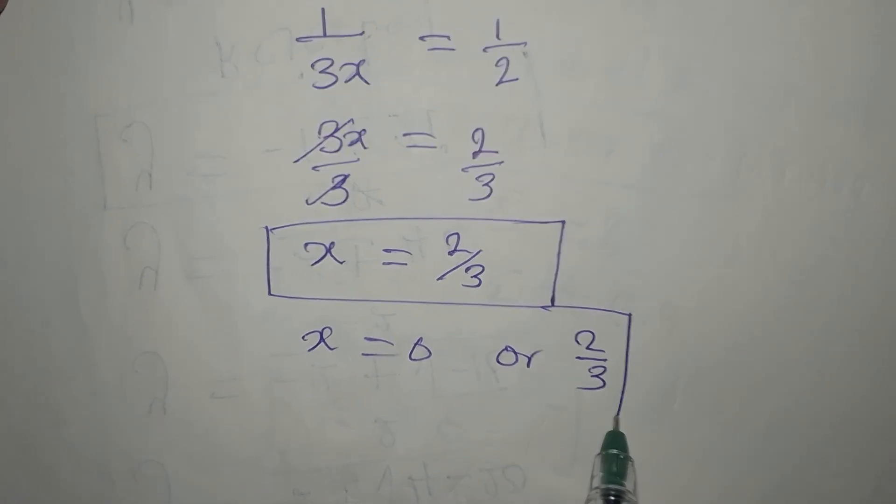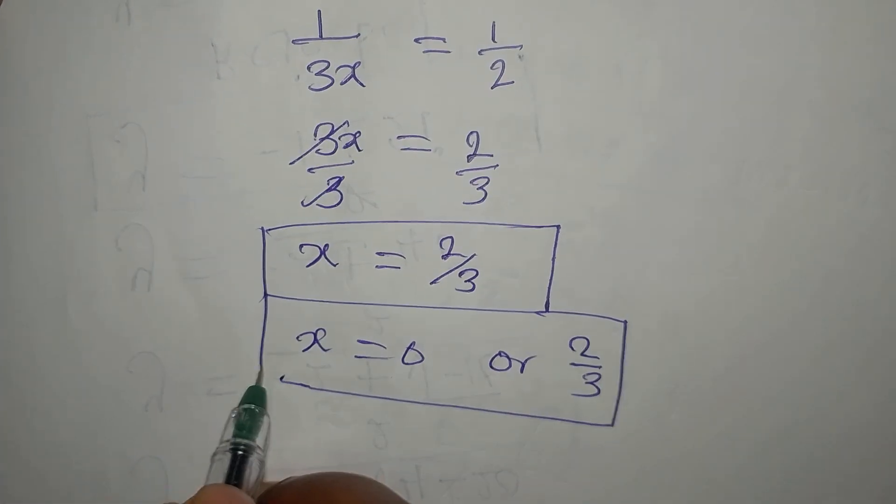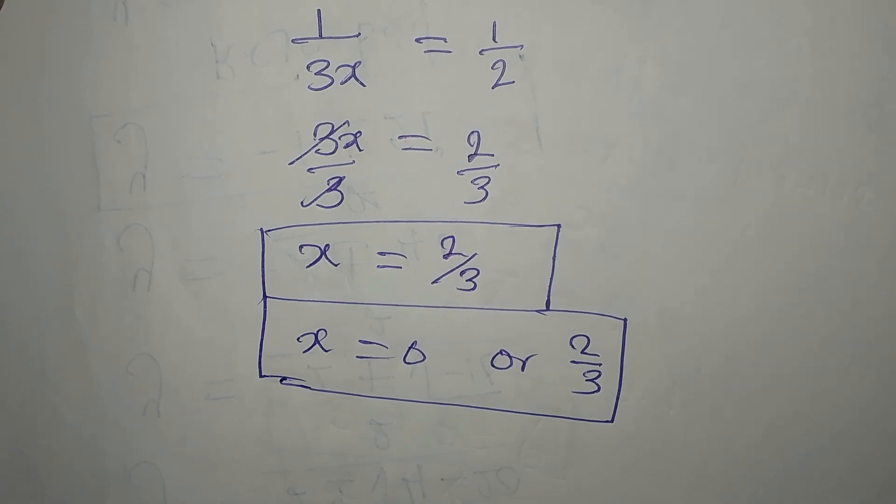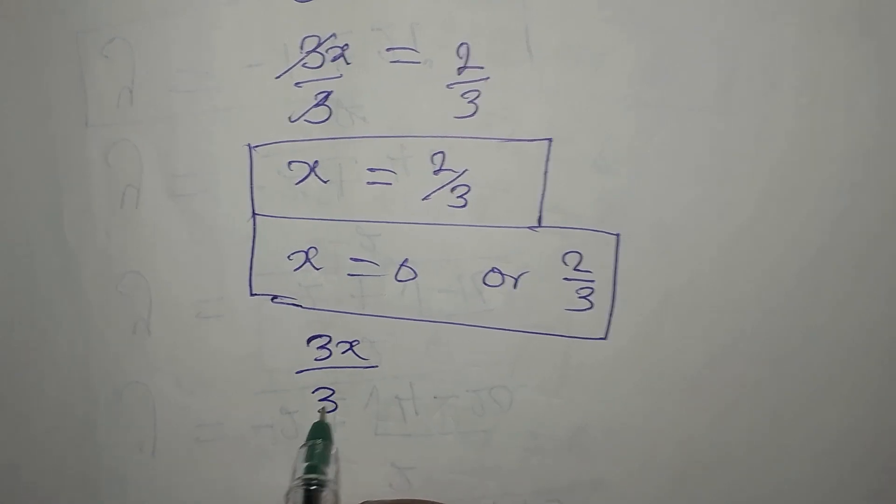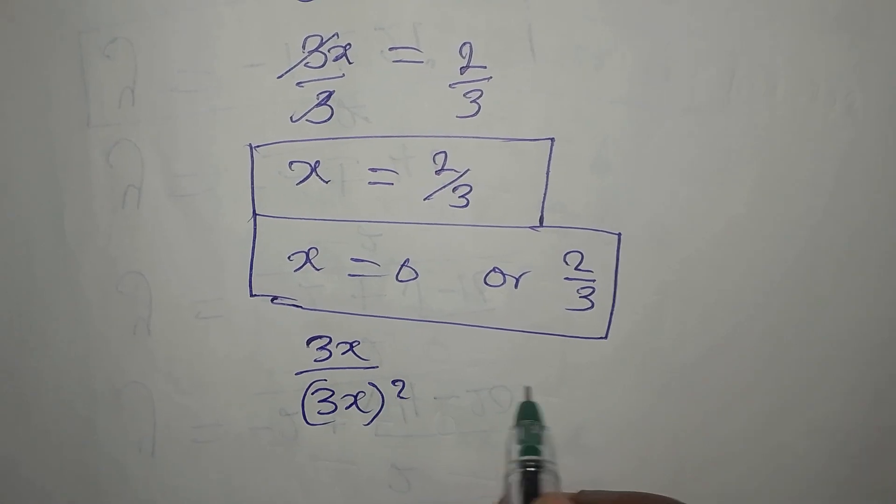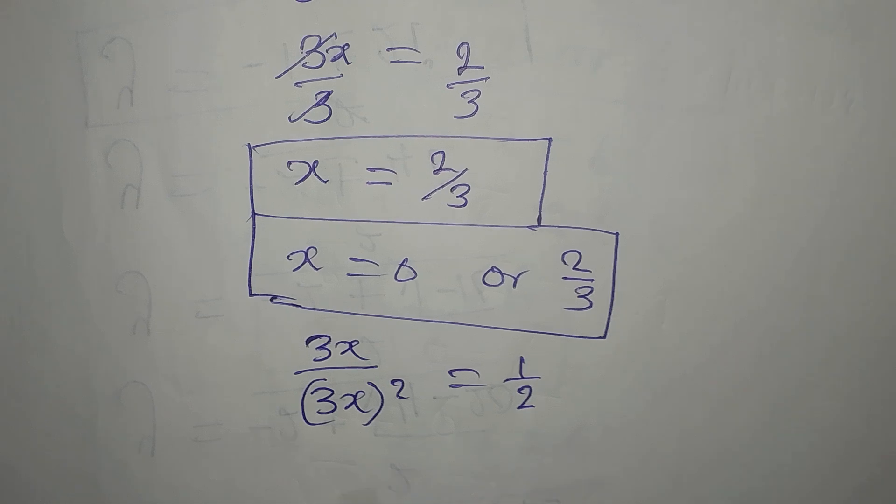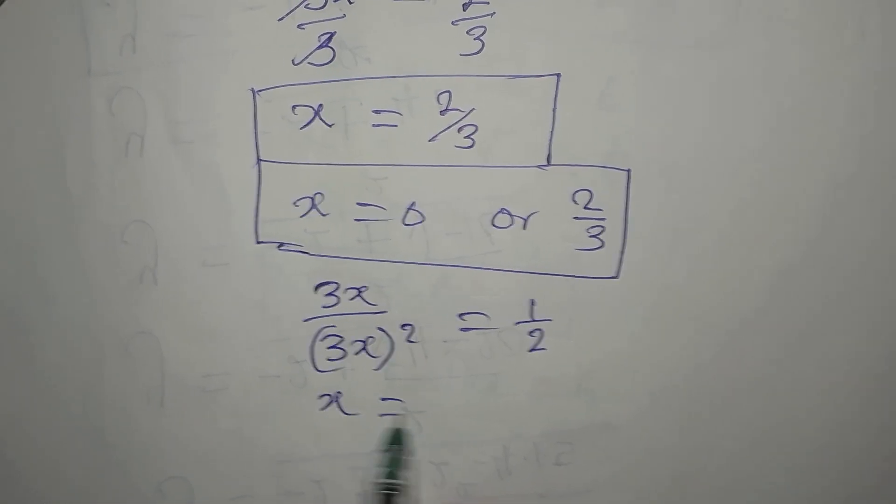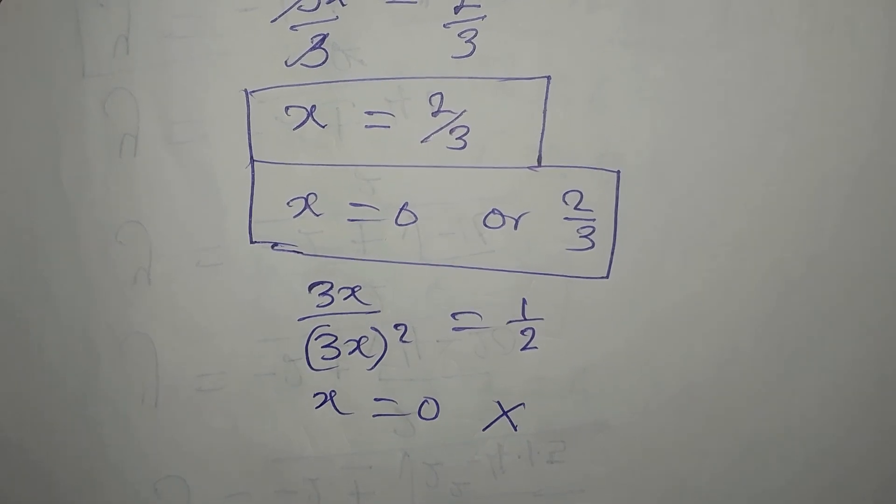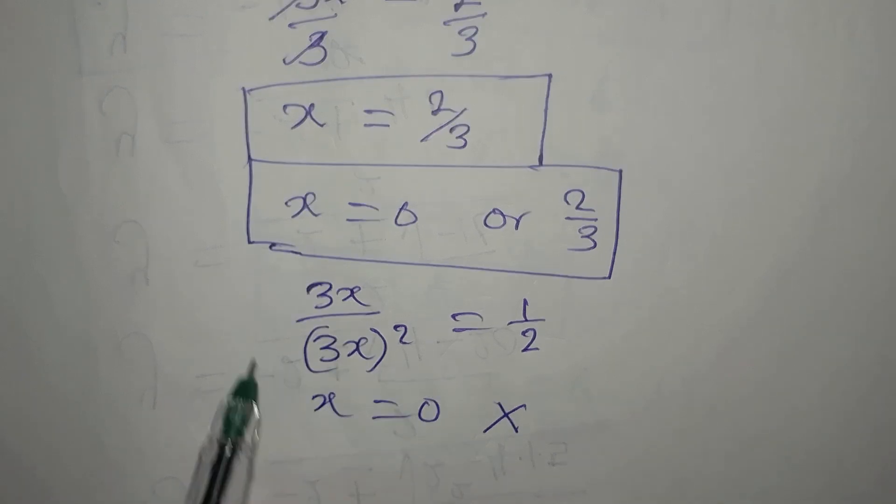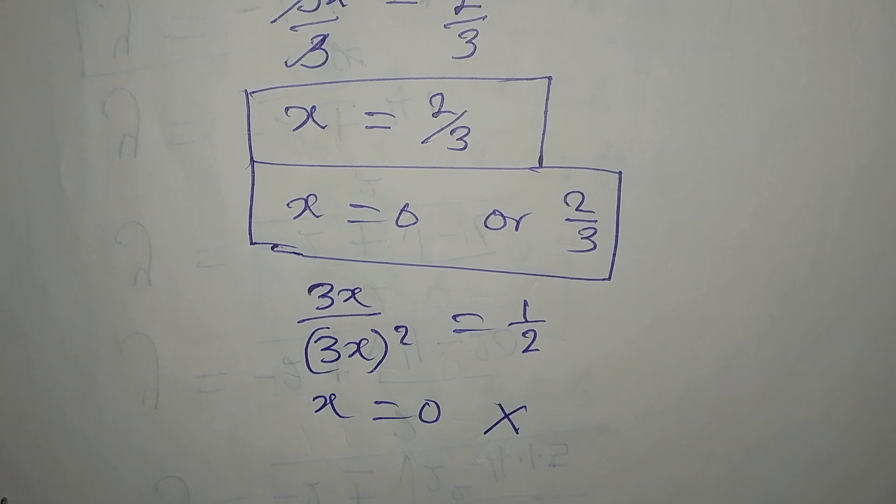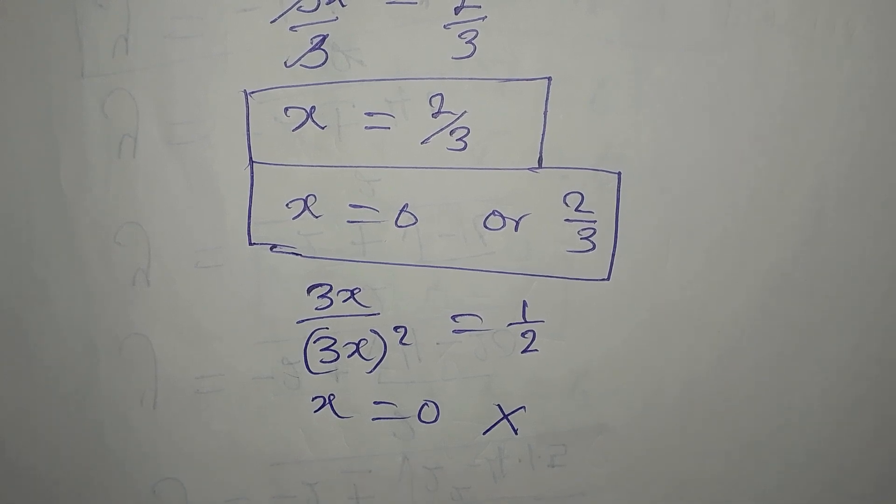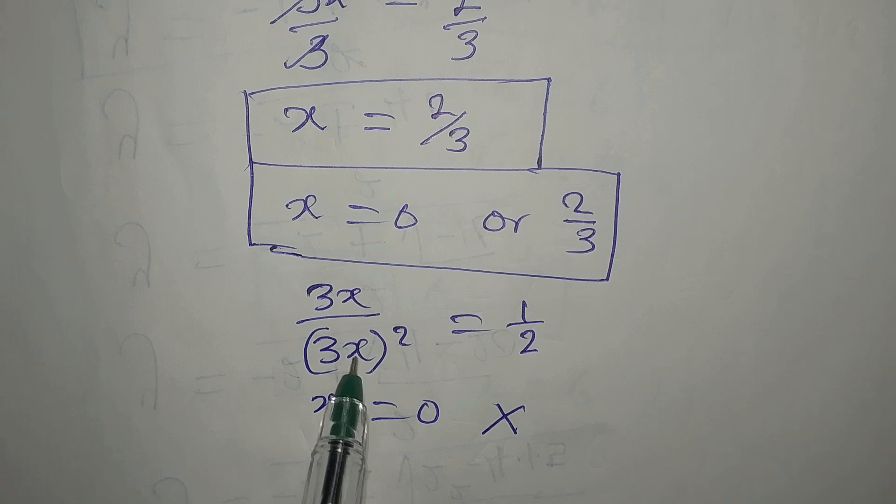Which one of these is more correct? You discover that this equation, 3x over 3x squared equals 1 over 2, cannot have x equals 0 as a solution because that will make this expression on the left undefined. At the end of the day, we'll have 0 over 0.